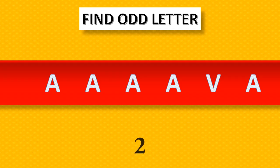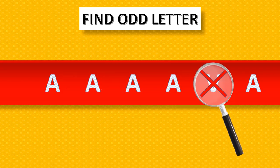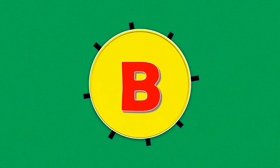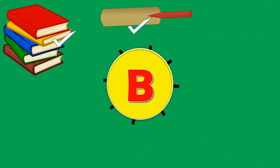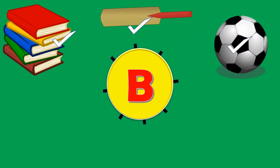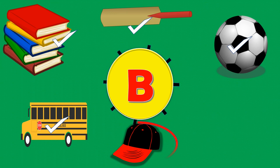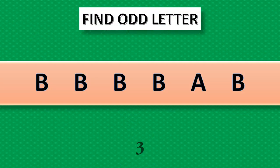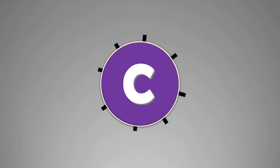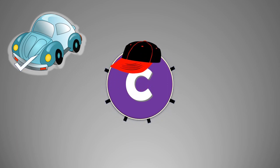Find odd letter. B. B for books, correct. B for bat, correct. B for ball, correct. B for bus, correct. B for cap — no, it's wrong. B for bear, correct? Yes.